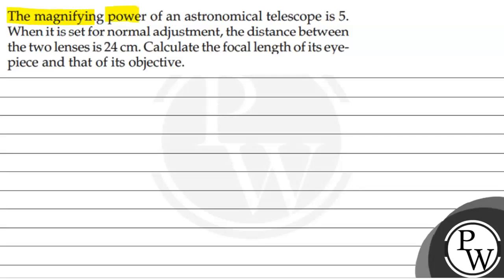The question is the magnifying power of an astronomical telescope is 5. When it is set for normal adjustment, the distance between the two lenses is 24 cm. Calculate the focal length of the eyepiece and that of its objective.